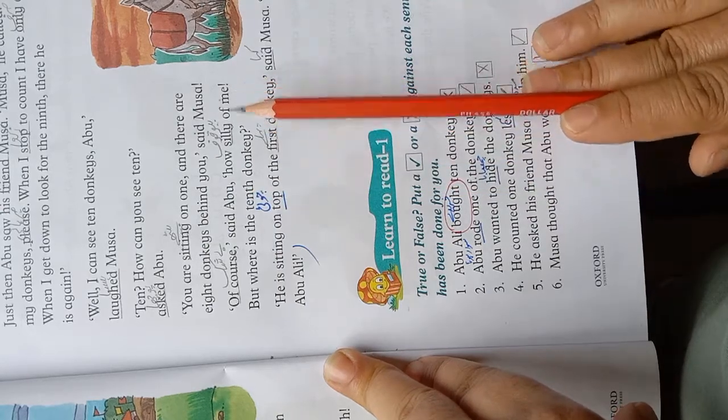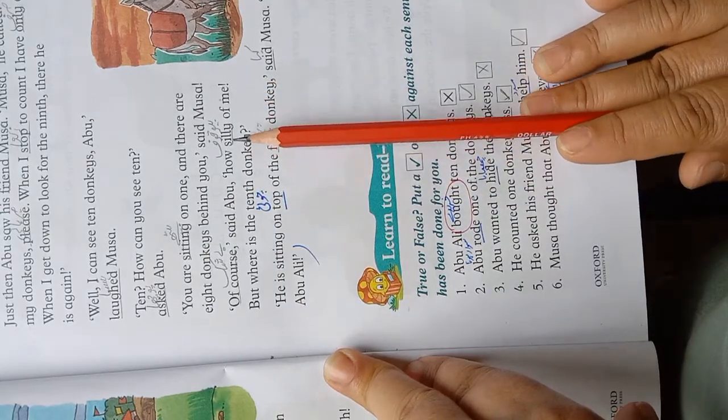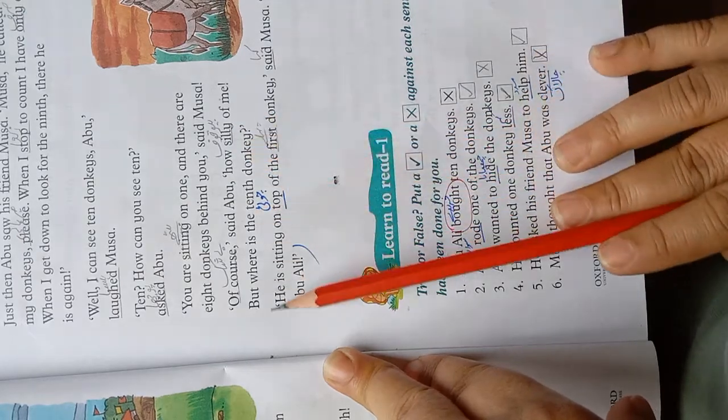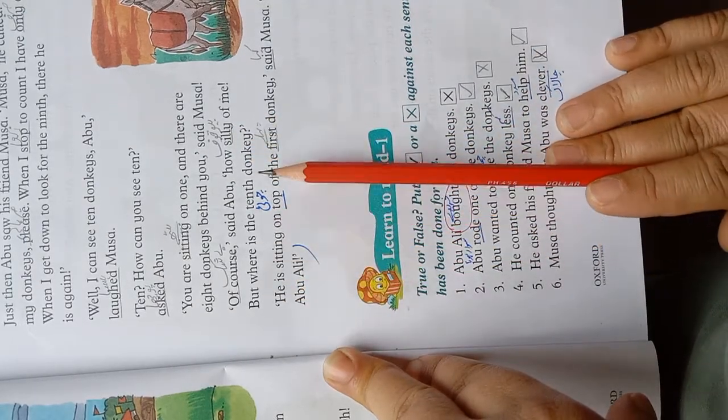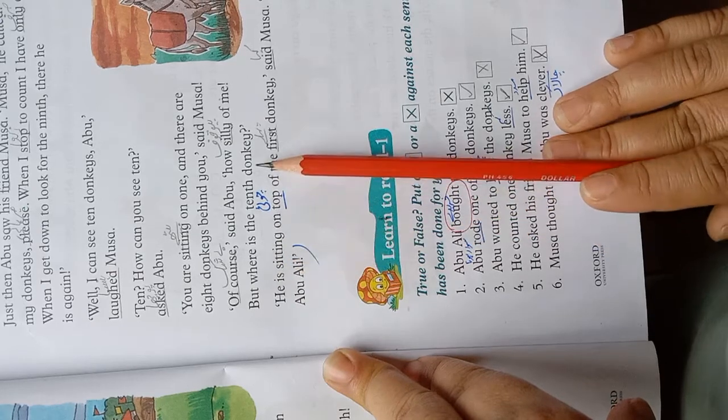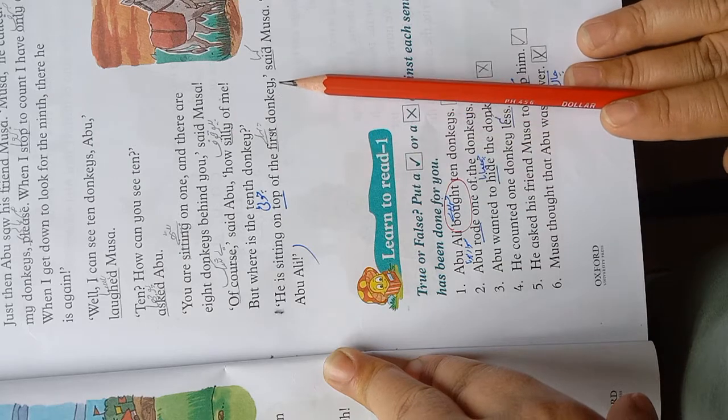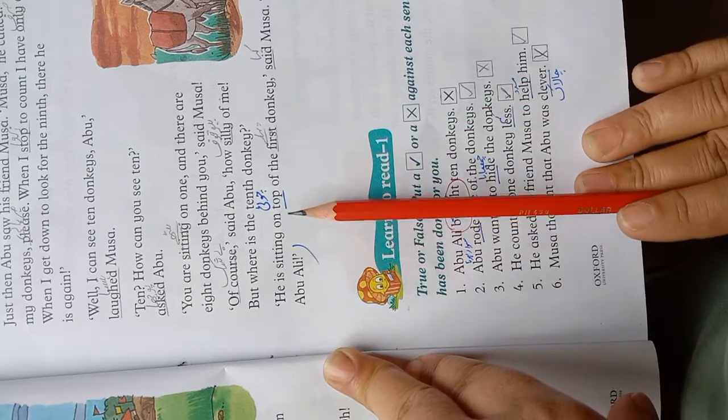Of course! Said Abu. How silly of me. Silly ka meaning hai bewaqoof. But where is the tenth donkey? Lekin daswan gadda kahan hai?